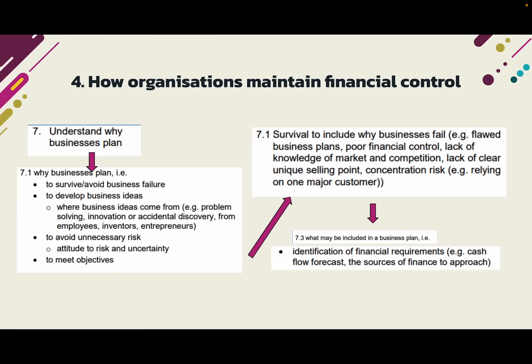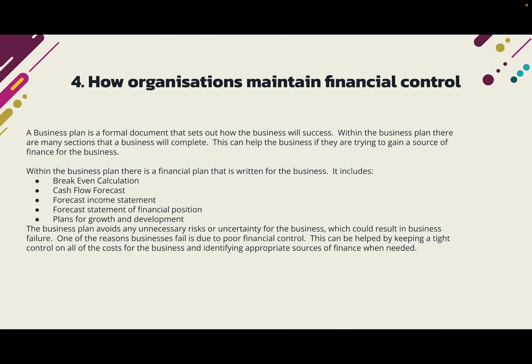We're going to look at this from a cash flow point of view. The tools for maintaining financial control include break-even, cash flow forecast, income statement, forecast statement of financial position, and plans for growth. It might be worth also revising break-even or income statements as methods of financial control, because we don't know the exact question — we're taking a bit of a stab in the dark with cash flow, as it could be any of these things.